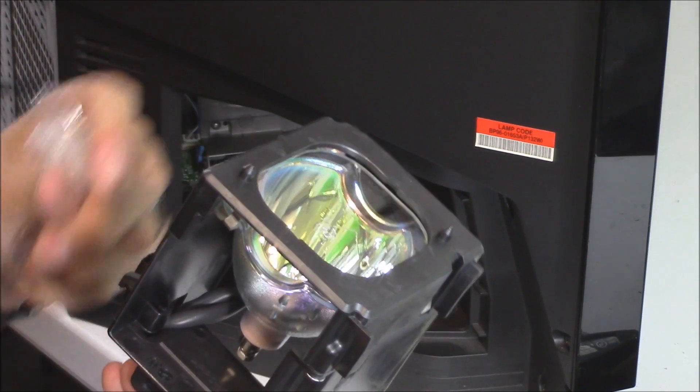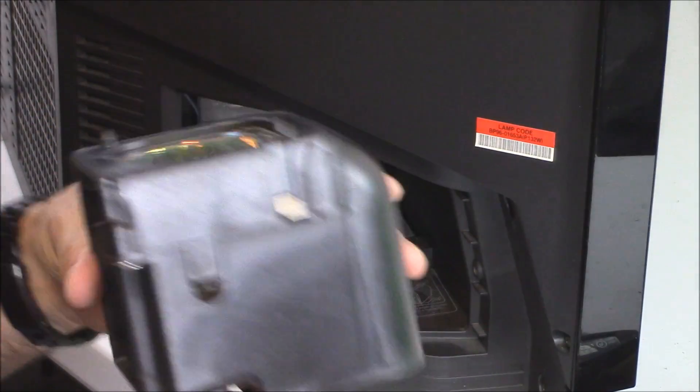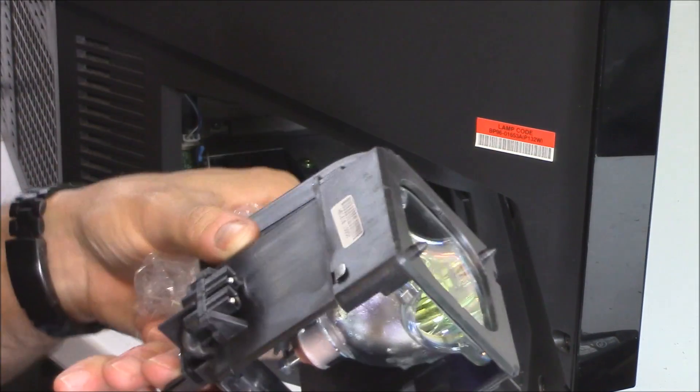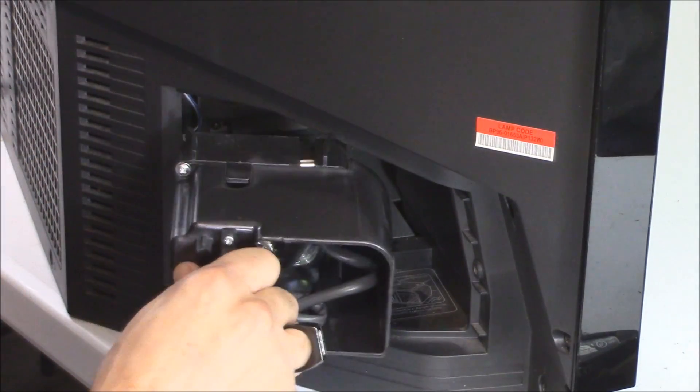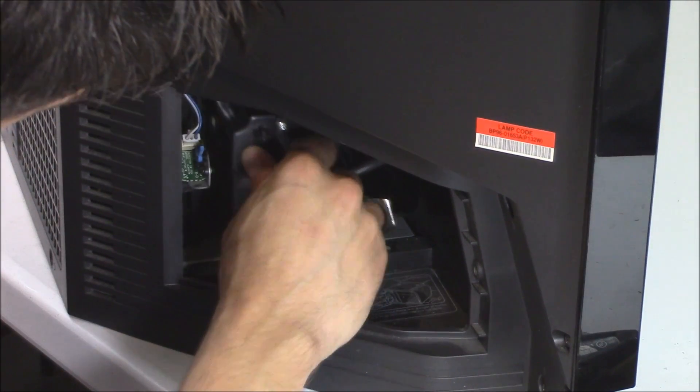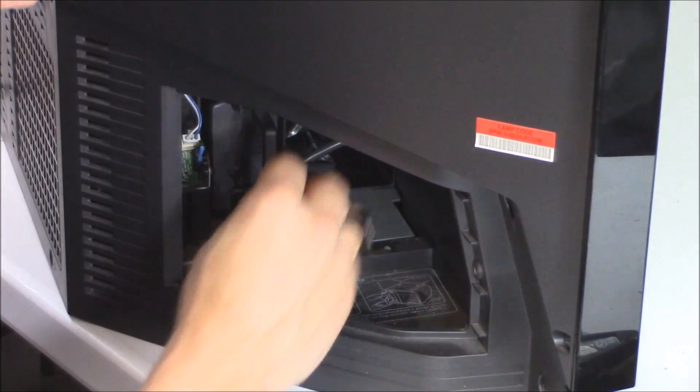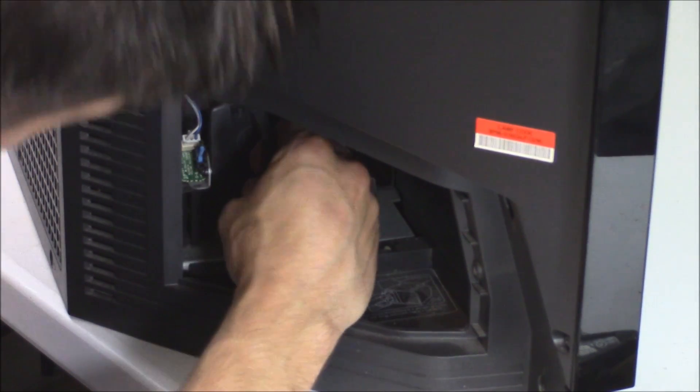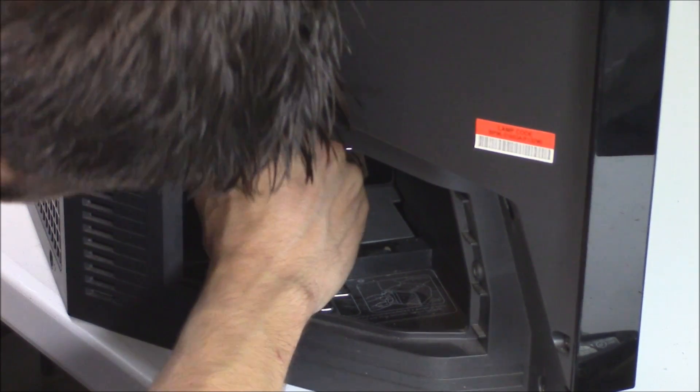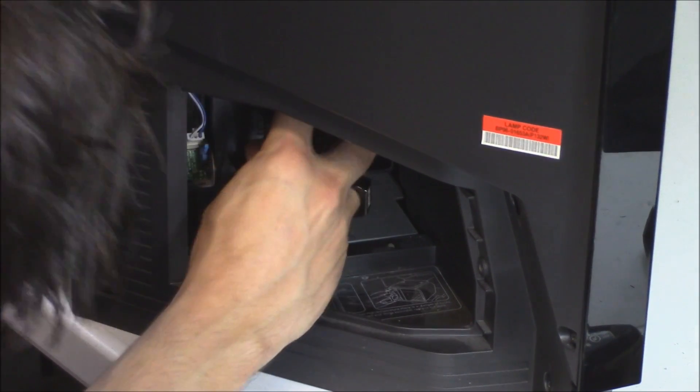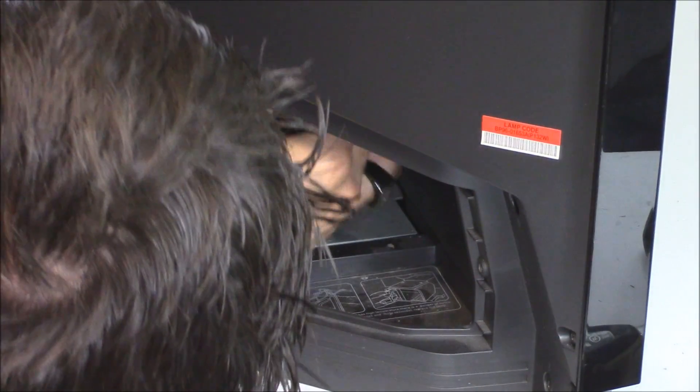You can buy the bulb separately and it'll save you like twenty bucks. But in this case, the TV is kind of old and I just wanted brand new plastic in there so it'll last the customer a long time. The bulbs last about five thousand hours depending on your eco mode settings. Make sure it's plugged in nice and snug. Push this down and this up. Just like that.